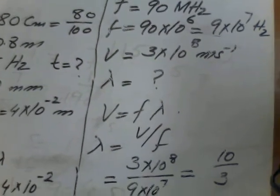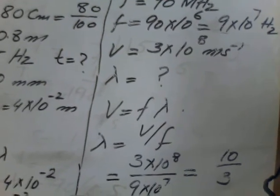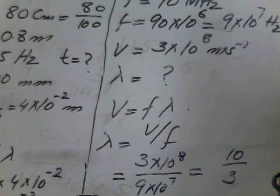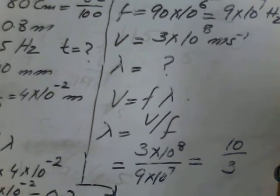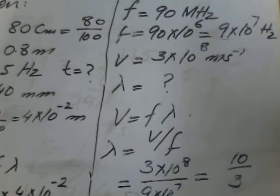The velocity is V equals 3 into 10 raised to power 8 meter per second. We have to find the wavelength, that is lambda.